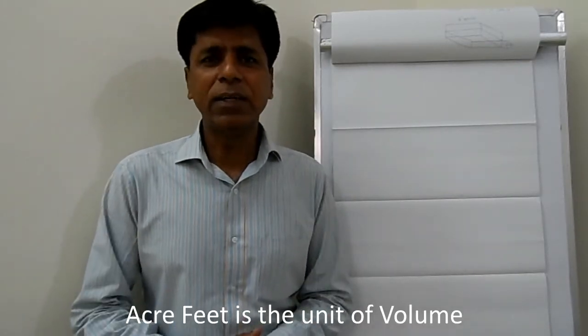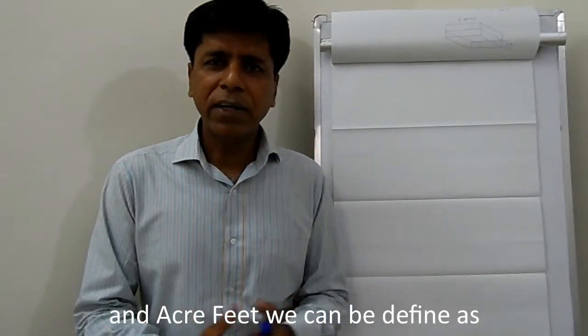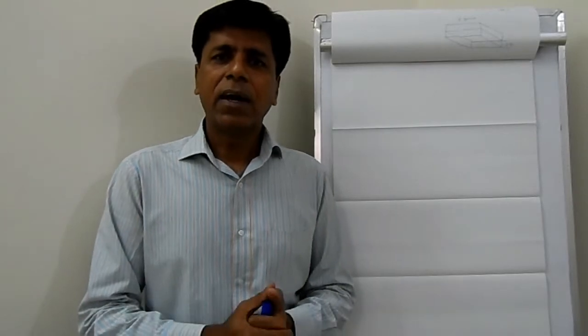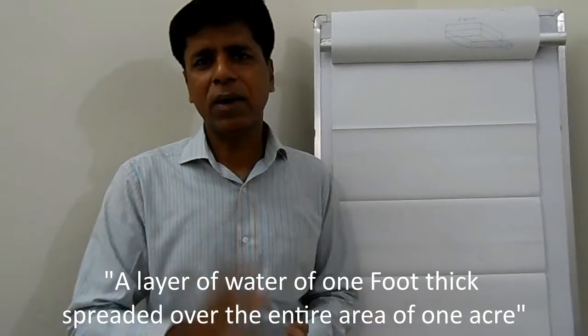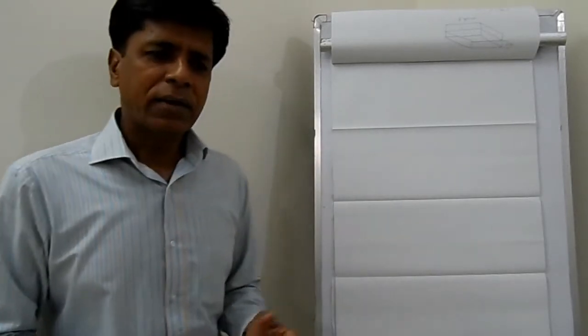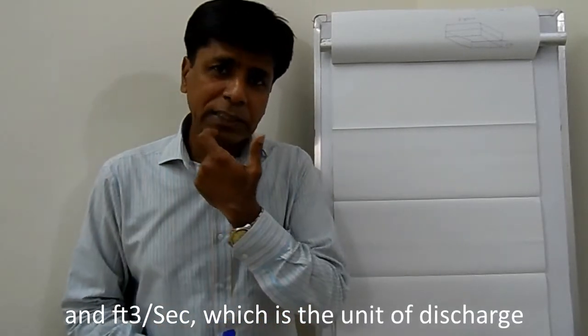Acre feet is a unit of volume, and we can define acre feet as a layer of water of one foot thick spread over the entire area of one acre.